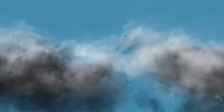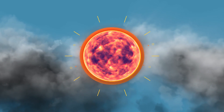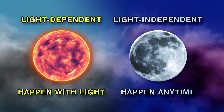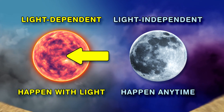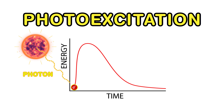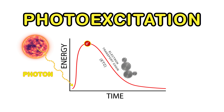Photosynthesis makes chemical energy from sunlight, with light-dependent and independent reactions. We will cover light-dependent reactions. These take place in the thylakoid and involve photoexcitation — photons give electrons higher energy excitations, used by the electron transport chain for energy generation.